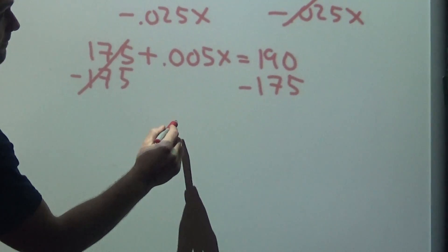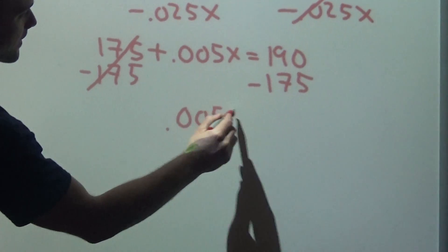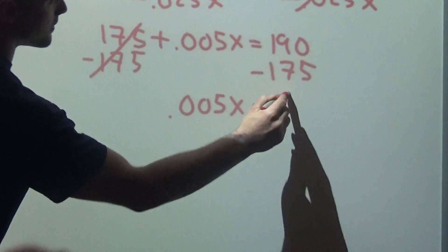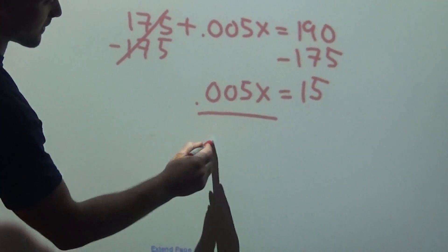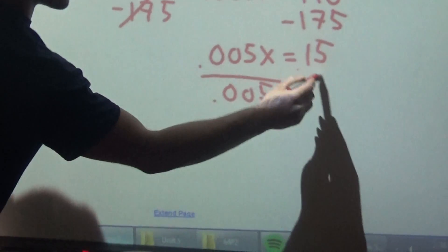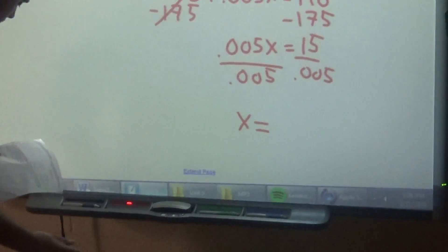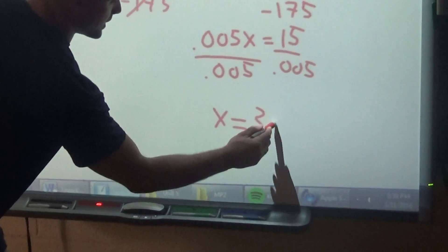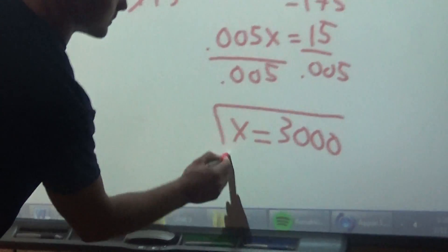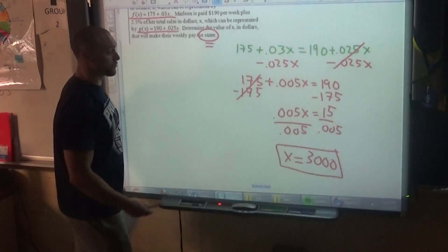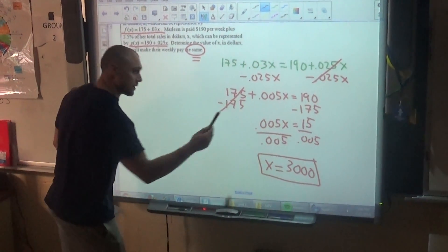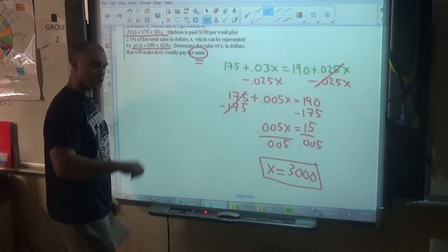So we have 0.005x equals 15, and I'm going to divide by 0.005. And so we get x equals, I believe, 3,000. So if they both sold $3,000 worth of shoes in a week, they would make the same amount. Good job.